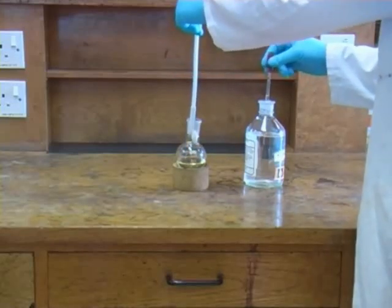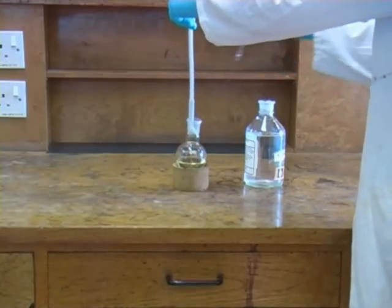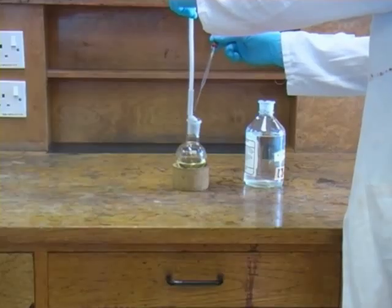The first step is to remove the magnetic stirring flea from the reaction flask and we need to wash this with ether to ensure that we don't lose any of our product.